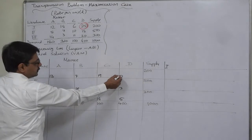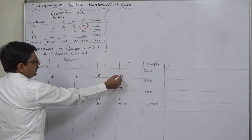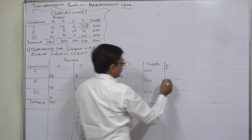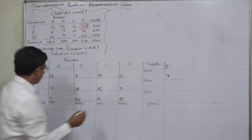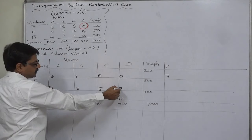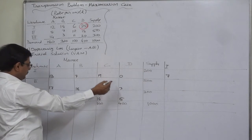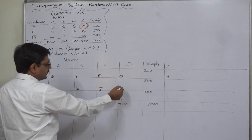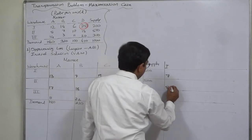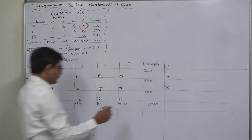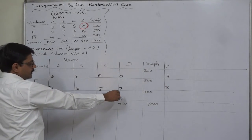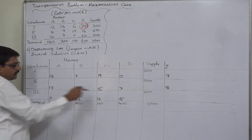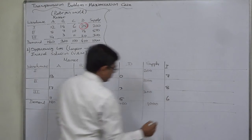Let us calculate the penalties. For row 1, the least cost is 0 and the immediate higher is 7, so 7 minus 0: penalty is 7. For row 2, the least cost is 7 and the immediate higher is 15, so 15 minus 7: penalty is 8. For row 3, the least cost is 5 and the immediate higher is 11, so 11 minus 5: penalty is 6.